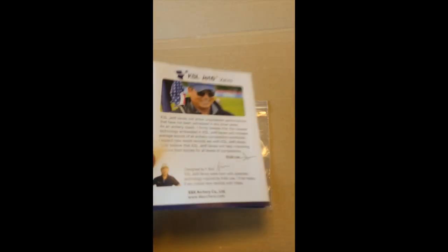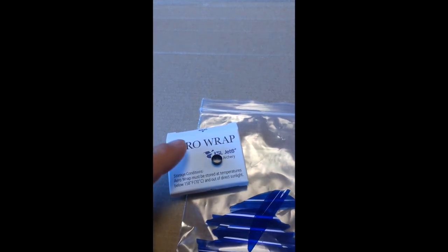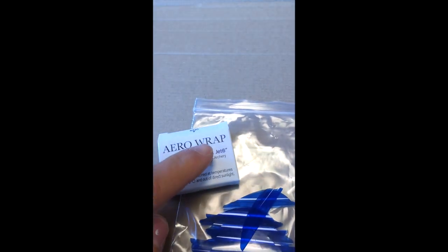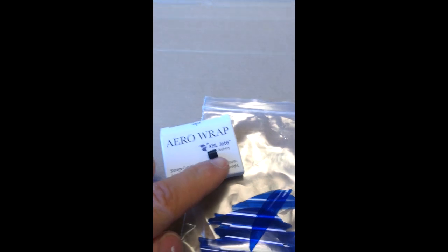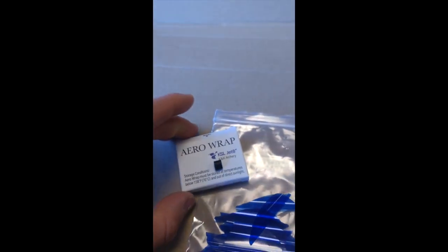Out of the box, we've got an instruction manual in a few languages. Instead of anchor tape, we have heat shrink arrow wraps - short tube lengths of heat shrink for anchoring the vanes instead of the traditional tape method.